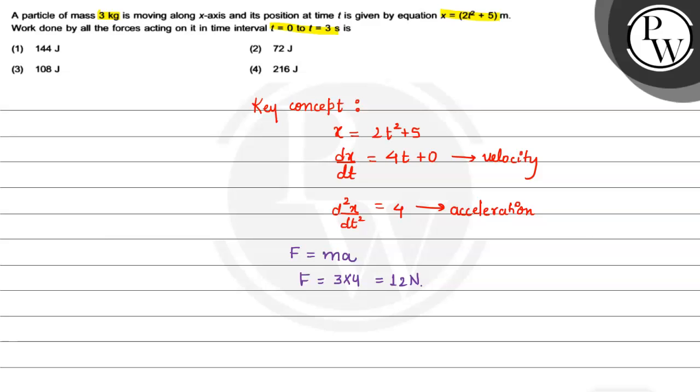Now we have to take displacement t = 0 to 3. Let's take the displacement. 2t² + 5, put in 3: 2(3)² + 5, we will put minus 0, so this will be just 5.